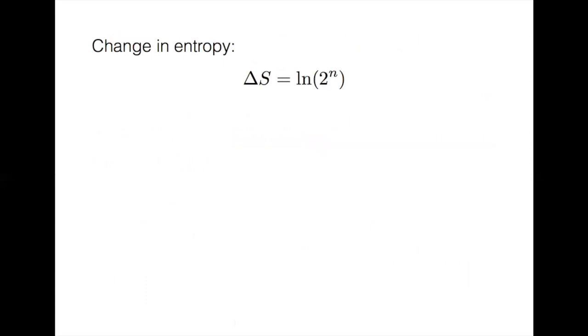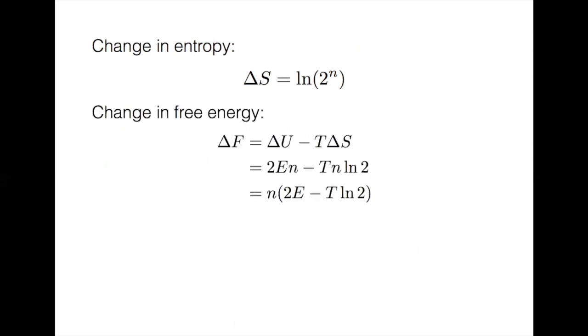So we can calculate the change in entropy, which will be ln of 2 to the n. We can then calculate the change in free energy, combining the previous two equations, which we find to be n times 2e minus T ln2.